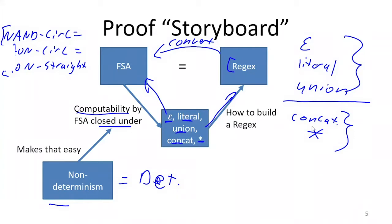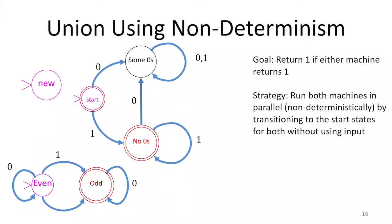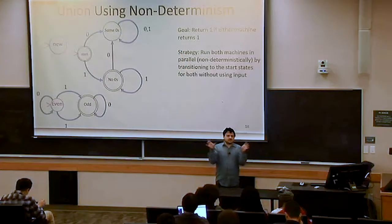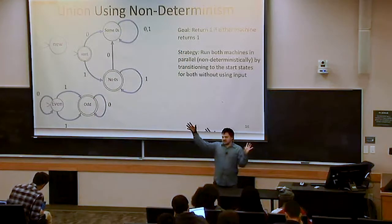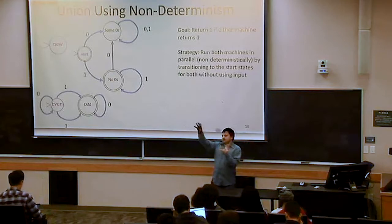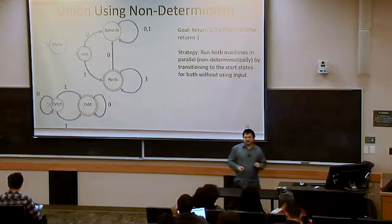To start with, I'm going to redo union using non-deterministic machines to show you why this was a worthwhile endeavor. When we used deterministic machines for union, we had to do this power set construction — we had to take our two machines and make some grand machine where every state was a pair of states.